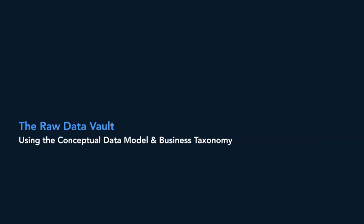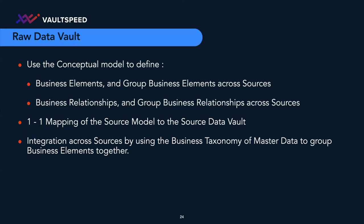If we look at the real approach — which we at Vault Speed have also built into our tool — you use that conceptual model and the business taxonomy. You use the conceptual model to define business elements and group them across sources, and the same with business relationships. You can still do a one-to-one mapping of your source model towards the Data Vault, and the integration across sources happens by using the business taxonomy of master data to group business elements together. Having this business taxonomy during source analysis helps you find those objects that belong to a certain master data element and taxonomy, and map them to the right entity in your conceptual model.